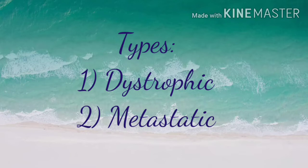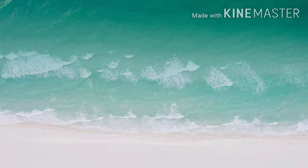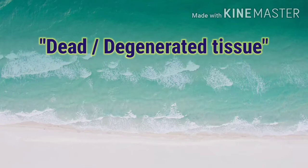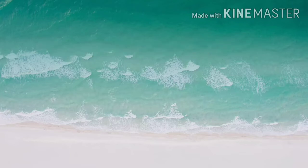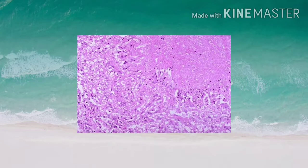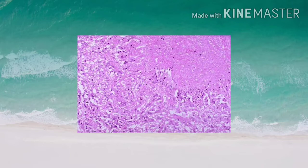Pathological calcification can be divided into dystrophic calcification and metastatic calcification. Dystrophic calcification occurs in dead or degenerated tissues. Now let's have a look at the examples of dystrophic calcification. Dystrophic calcification commonly occurs in foci of caseous necrosis.